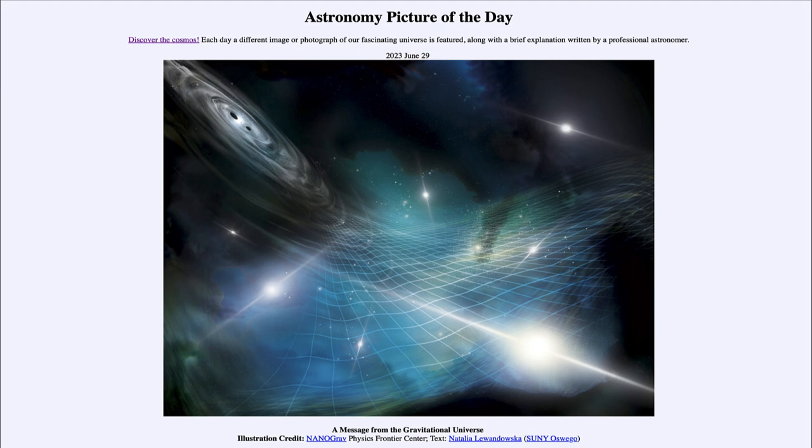Gravitational waves occur when any object with mass moves. However, because the force of gravity is so weak, those waves are very tiny and essentially undetectable unless you have very high masses moving at very high speeds.